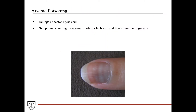With arsenic poisoning, an overload of arsenic inhibits the cofactor lipoic acid, which from Unit 3 is involved in many important reactions in metabolism. These patients will have symptoms of vomiting, rice water stools, garlic breath, and changes in the coloration of their fingernails called Mee's lines. The way you treat arsenic poisoning is with chelation agents to remove it. Long-term arsenic poisoning can be due to high levels of arsenic in the water supply in a community.